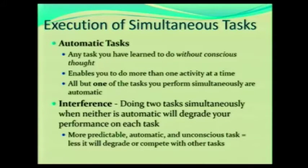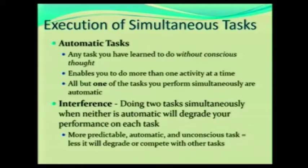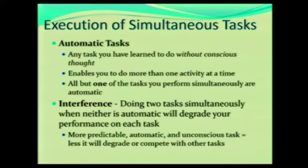Here's another great thing about habits and automatic tasks: we can do multiple automatic tasks at the same time. But we can only do one task at a time that is not a habit, that is not automatic. This surprises a lot of people because we talk about multitasking all the time. If you look at the research, we're not good at it — you're less efficient, less effective, and it's more error prone if you are truly trying to multitask. Why? Because of something called interference. Doing two tasks simultaneously where neither is automatic will degrade your performance on each task.